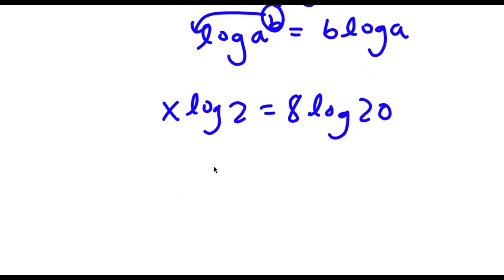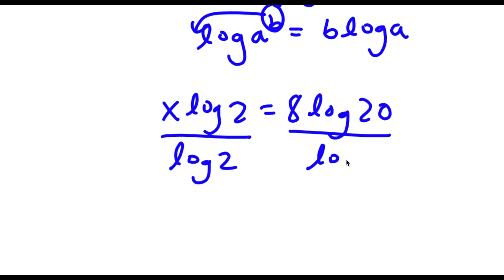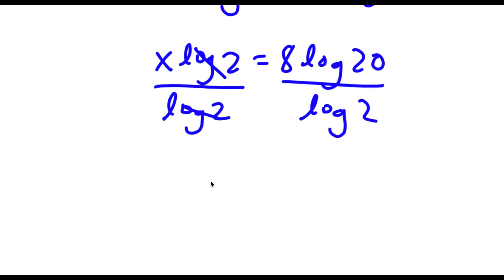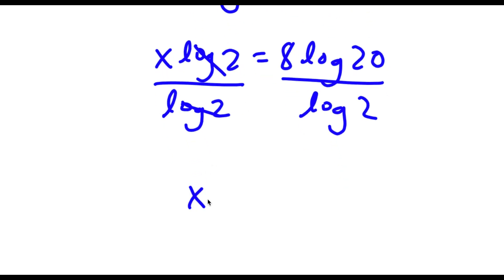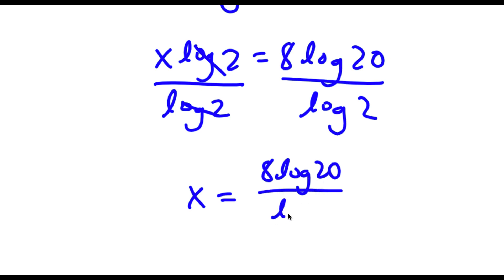So now I'm going to divide both sides by log 2. These two cancel out, and now I'm left with x is equal to 8 log 20 over log 2.